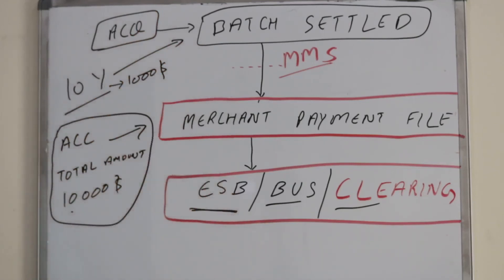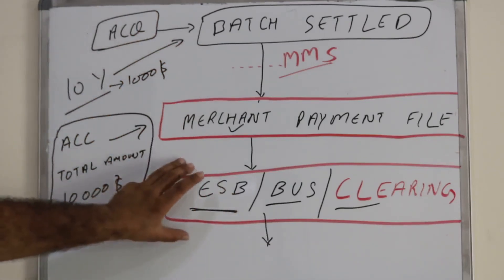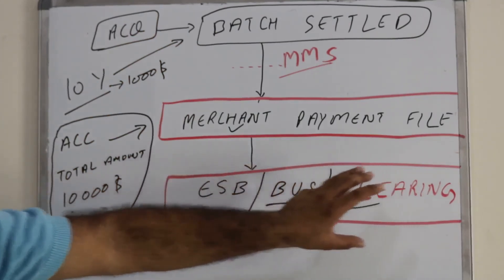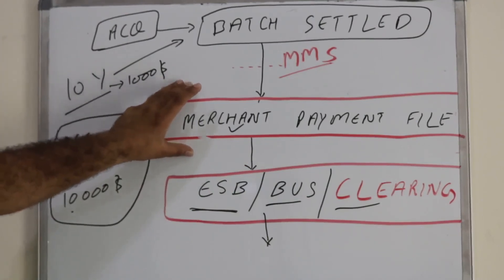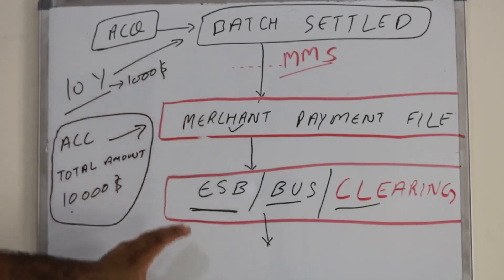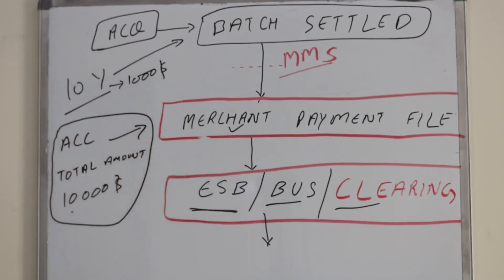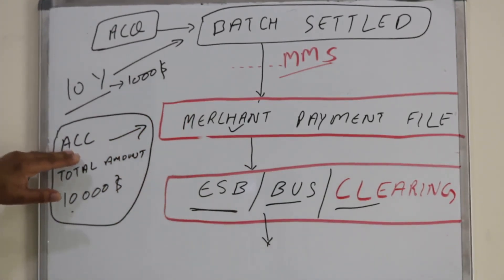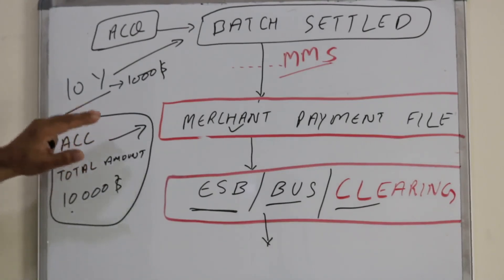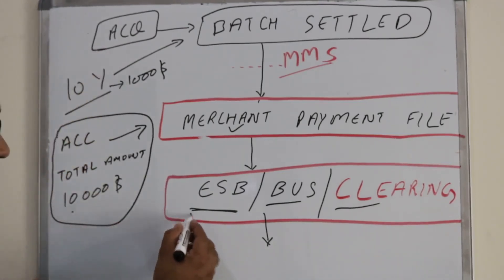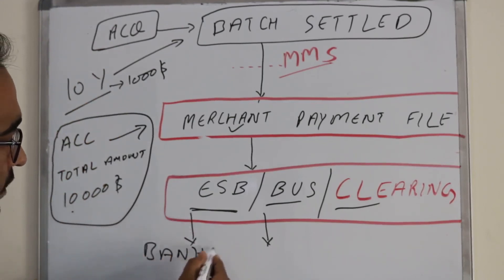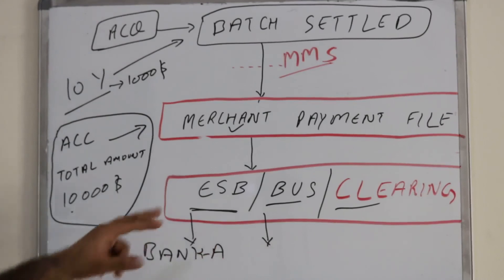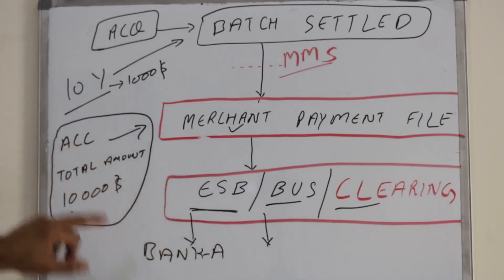There is an integration between the acquiring bank and this ESB system — a third-party vendor system. The ESB or middleware can accept the merchant payment file, process the format, and submit it to the next level. If the merchant has an account in the same acquiring bank, the file can go directly to bank A.